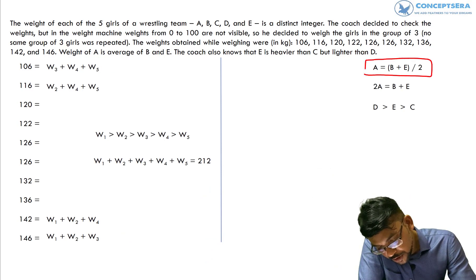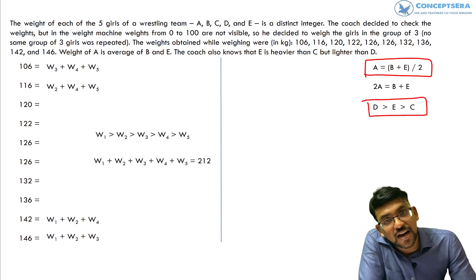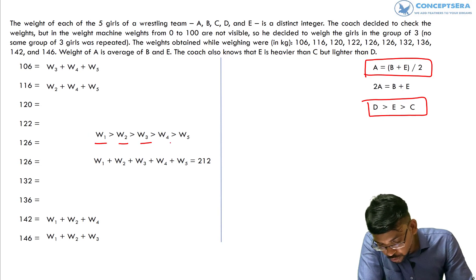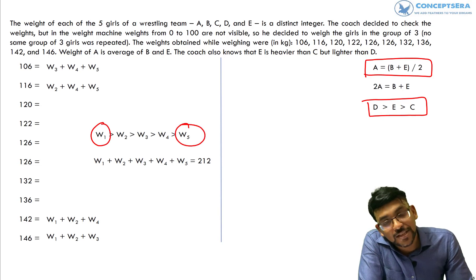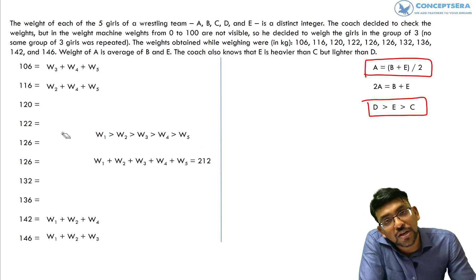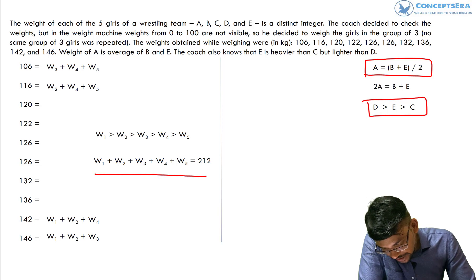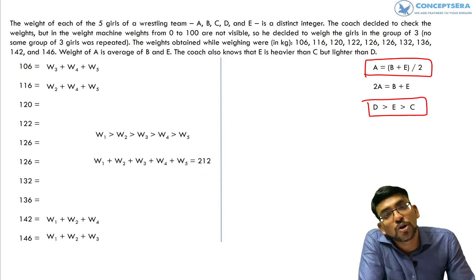We know the equation A + B + C + D + E = 212, and we know 2A = B + E, and E is heavier than C but lighter than D. Let's assume weights W1 through W5 where W1 is the heaviest and W5 is the lightest. So W1 + W2 + W3 + W4 + W5 = 212.